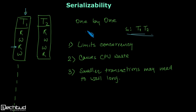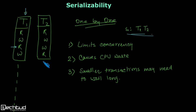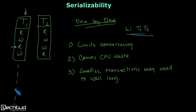So this is the third disadvantage of serial scheduling — we schedule each transaction one by one. The idea then is to execute multiple transactions in parallel in an interleaved manner. When we execute multiple transactions parallelly, the operations from multiple transactions need to be scheduled, and this gives us the idea of non-serial scheduling.